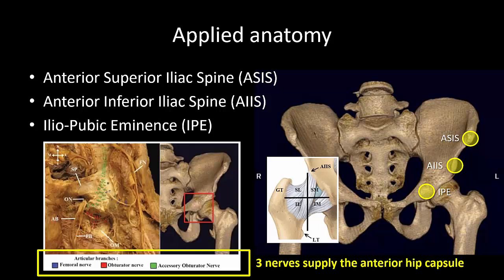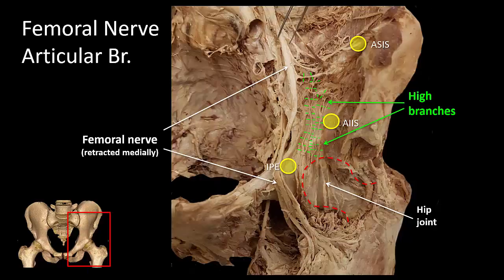There are three main nerves that give off articular branches to the anterior hip capsule: the femoral nerve, obturator nerve, and accessory obturator nerve. The femoral nerve gives off high branches which descend over the iliopubic ramus between the anterior inferior iliac spine and the iliopubic eminence, as you can see here.